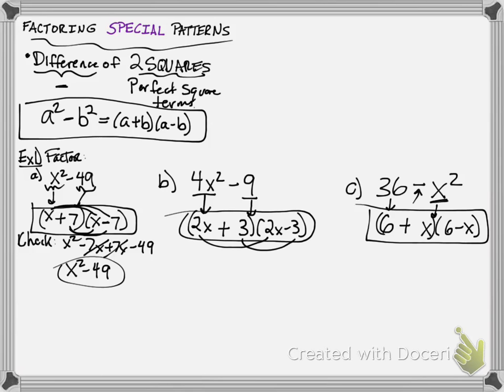Let's move on to the second of the special patterns. And it's called a perfect square trinomial. Perfect square trinomial. I'm just going to write tri for that. Now, this is going to be a trinomial, obviously.